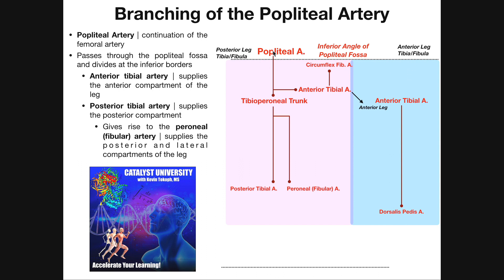The popliteal artery moves out of the popliteal fossa through the inferior angle and very quickly gives off a branch — the anterior tibial artery. Now we have a problem, because this is the anterior tibial artery but we're in the posterior leg. It turns out the anterior tibial artery moves through a hole in the interosseous membrane between the tibia and fibula, crossing over to the anterior side of the leg, where it remains as it moves down.